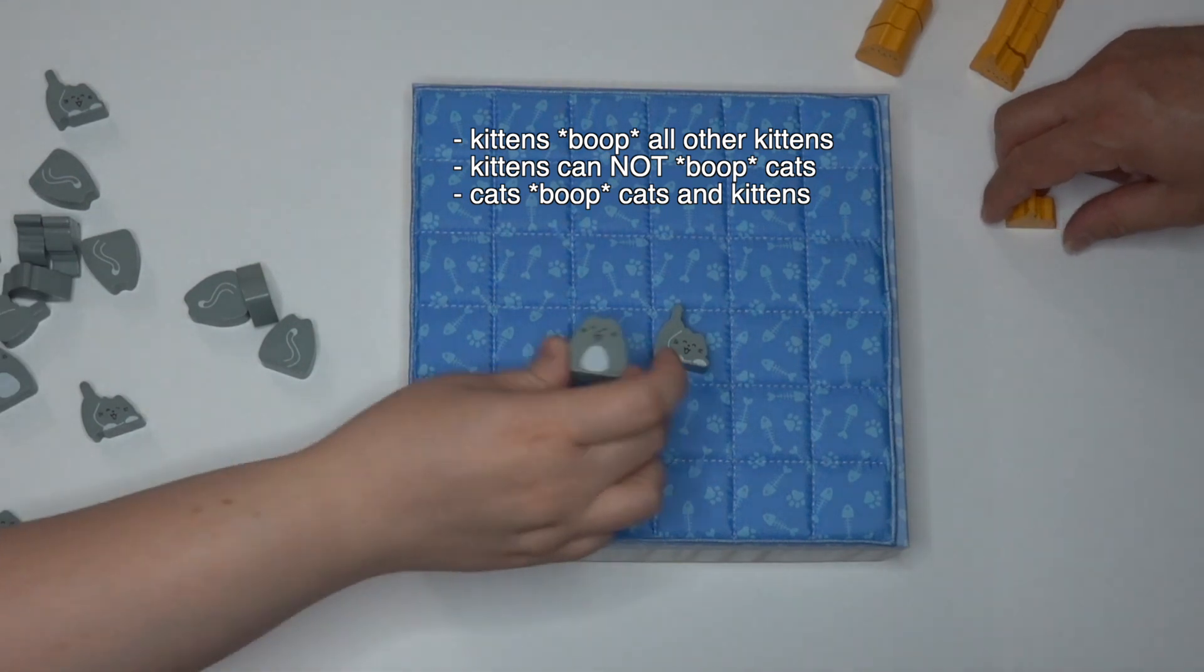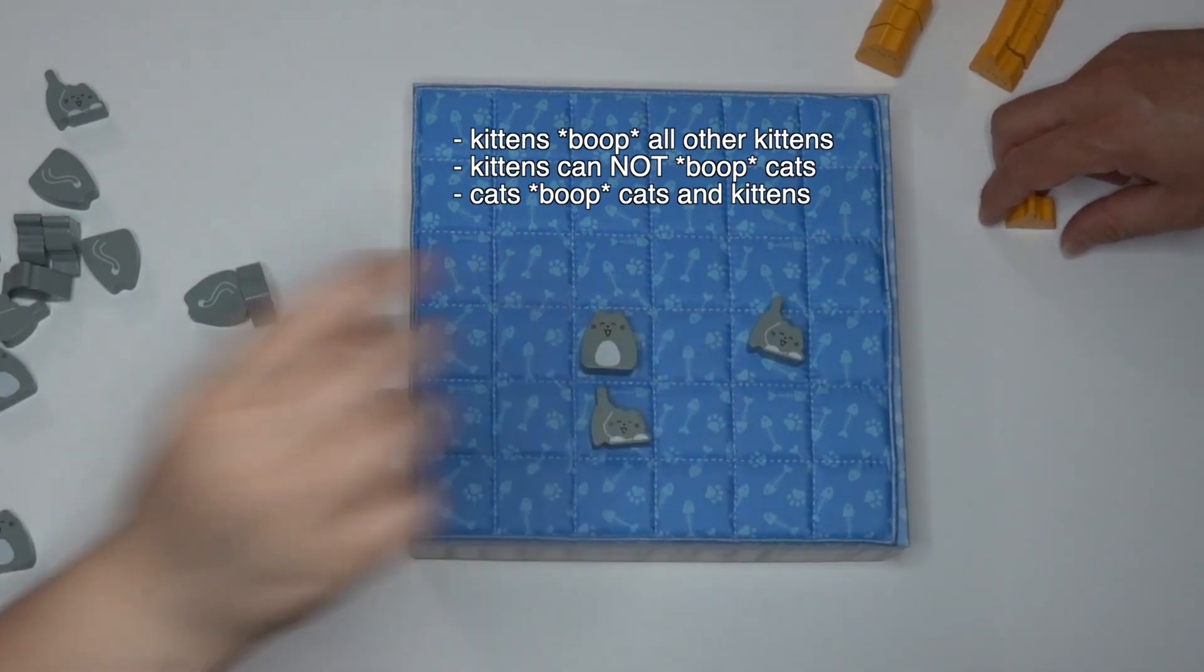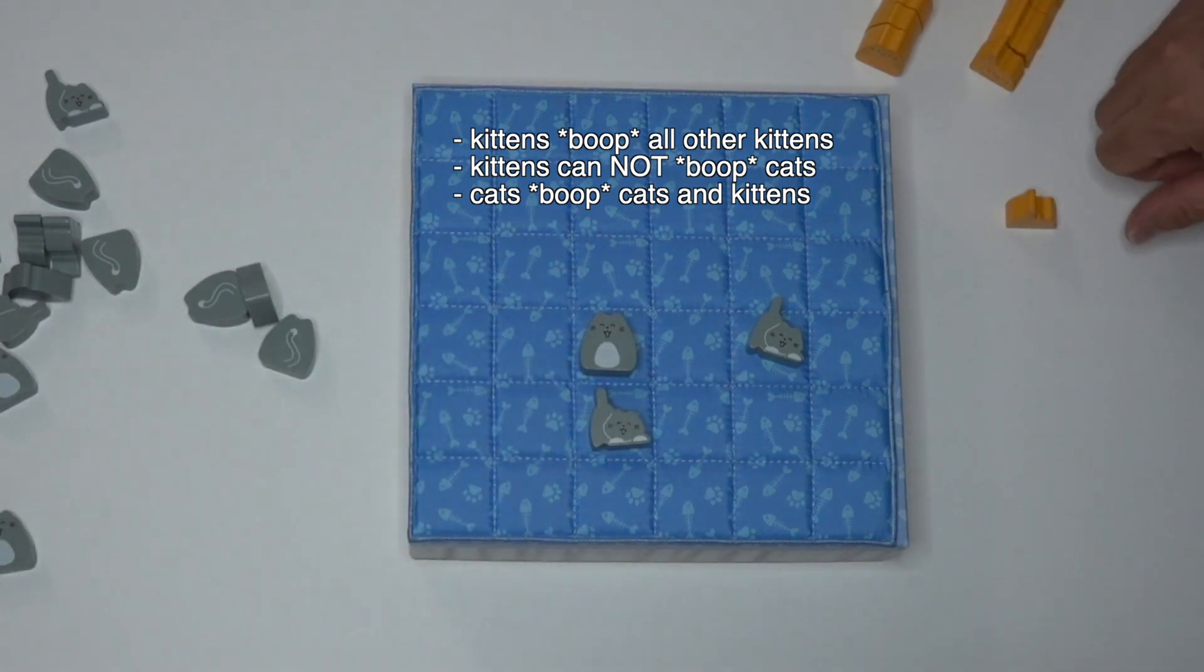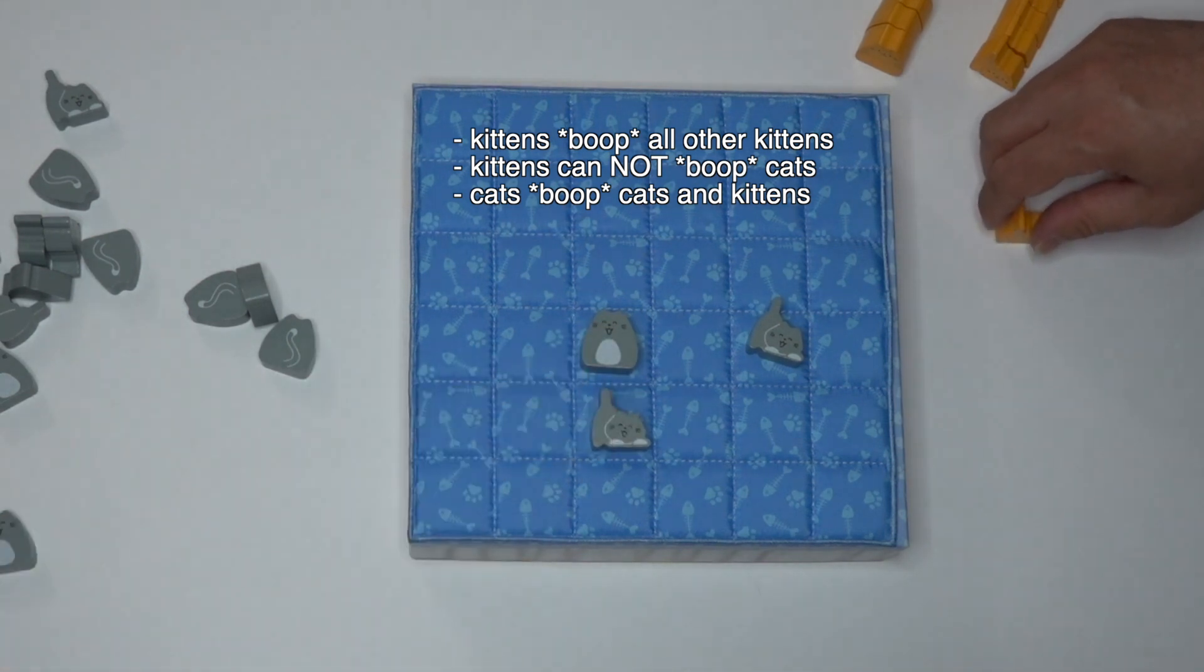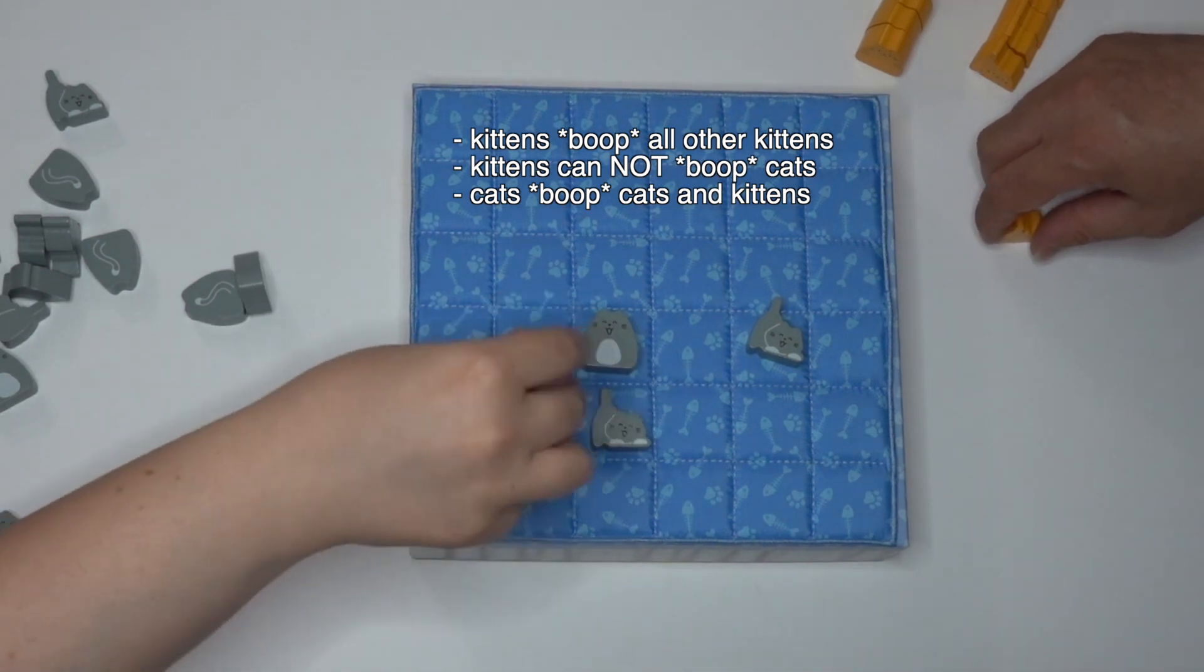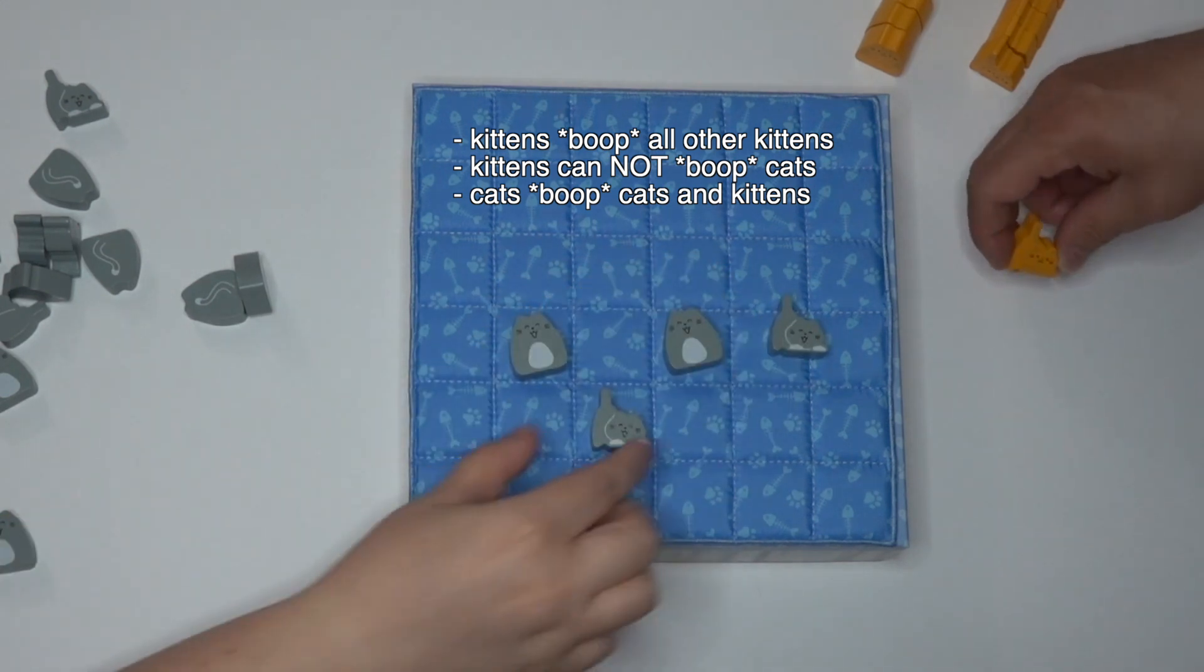But there is a special rule here that a cat will boop a kitten. But if we set a kitten down, the kitten will not boop the cat. The man at the smirk and laughter booth told us that I am not afraid of my kids, but I am afraid of my wife. So an adult cat will boop another adult cat and the kittens as well.